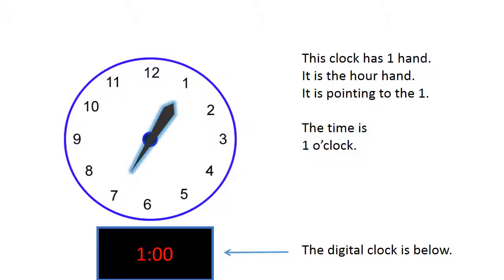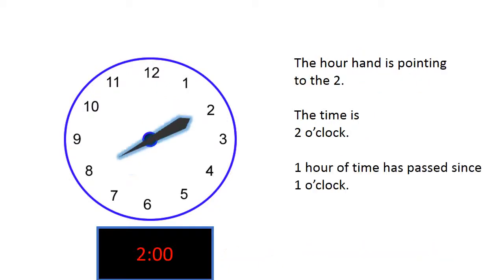The digital clock is below. The hour hand is pointing to the 2. The time is 2 o'clock. One hour of time has passed since 1 o'clock.